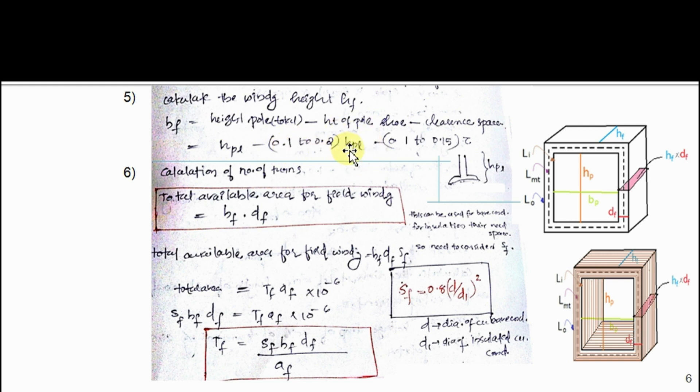Next step is to calculate number of turns. Total available area of field winding is hf × df. This is for bare conductor. For insulated conductor, multiply it with sf. sf is copper space factor: 0.8 × (d/d1)² where d is diameter of bare conductor and d1 is diameter of insulated conductor.